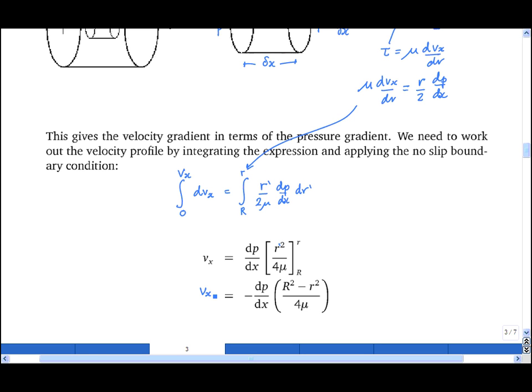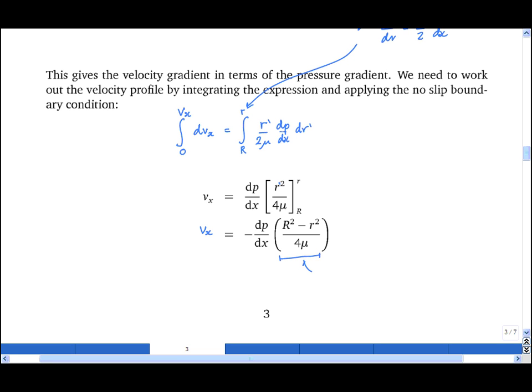And I can perform the integration from which I obtain the fact that vx has indeed a parabolic profile. Note that this term here is always positive because big R is bigger than little r, such that the velocity is always in the opposite direction to the pressure gradient.